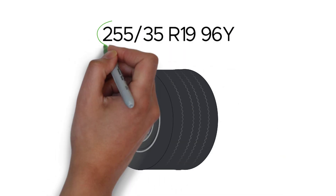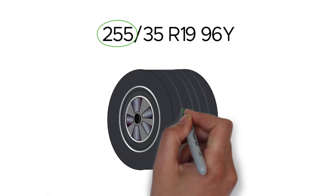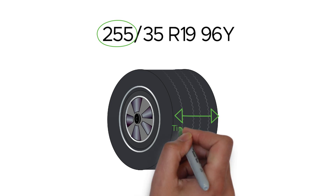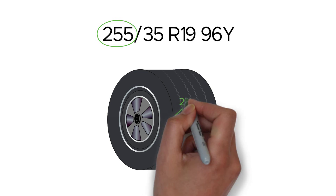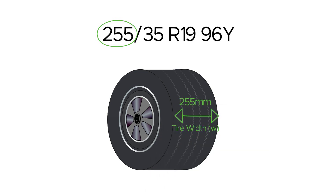The number 255 represents the width of the tire in millimeters from sidewall to sidewall, when the tire is mounted and inflated to its recommended pressure. In this case, the tire is 255 millimeters wide. A wider tire can provide more contact patch with the road, potentially improving grip and handling.